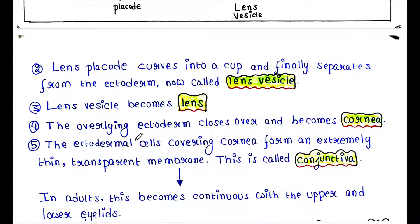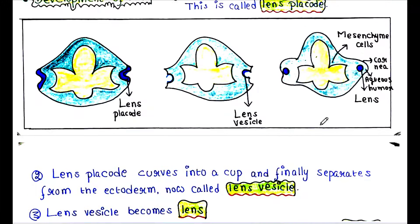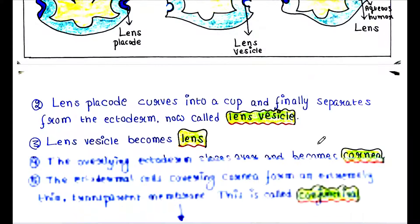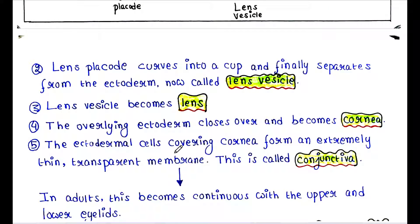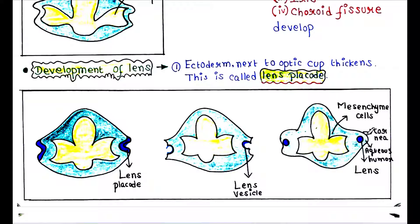The overlying ectoderm closes over and becomes the cornea. The ectodermal cells covering the cornea form an extremely thin transparent membrane called the conjunctiva, which forms above the cornea.